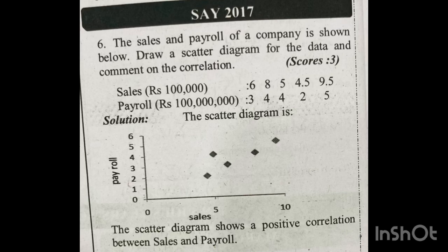Here we are looking at sales and payroll. Sales values are taken as x values and payroll values are taken as y values. We set up the scale: on the x-axis, 0, 5, 10, and on the y-axis, 1, 2, 3, 4, 5. We complete the graph with this scale.